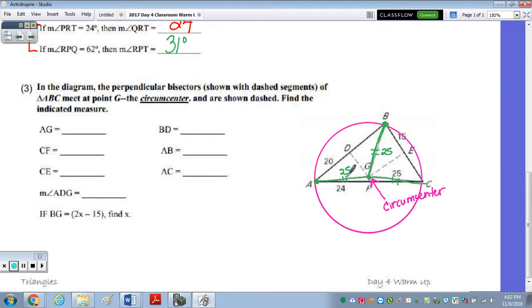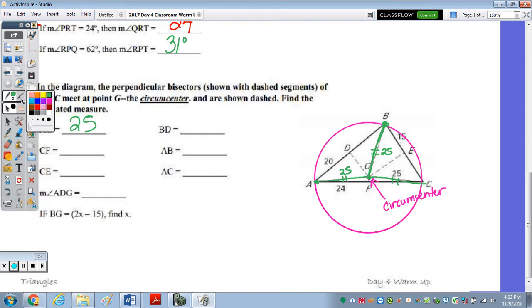So we have the answer to the first part of that question. We need to find the length of CF. So CF, let's highlight CF. That's the segment right here. And this segment is congruent to the segment FA. So if FA is 24, CF is also 24.